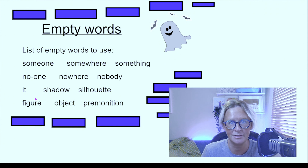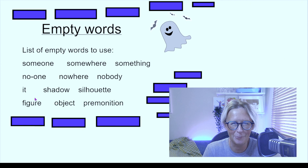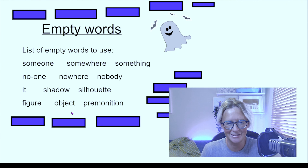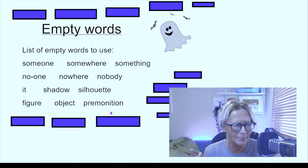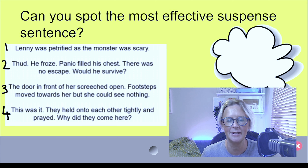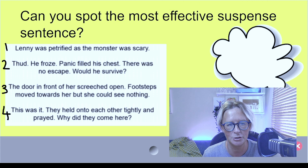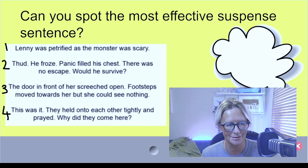There was an object. There was a figure. I don't know what it is — I just saw an outline, just a glimpse of it. I had a premonition, a feeling that something was going to happen. Have a look at this one then: can you spot which is the most effective suspense sentence? You can say sentence one, two, three, or four and drop it in the comments.